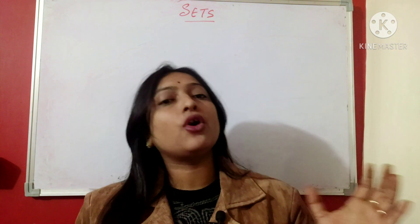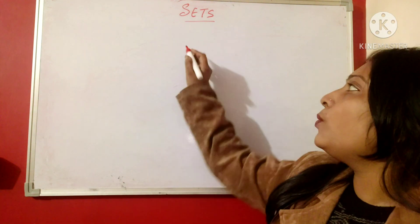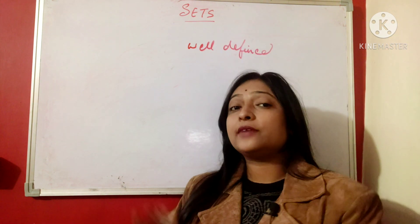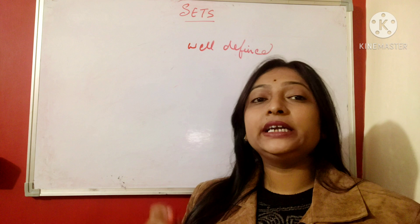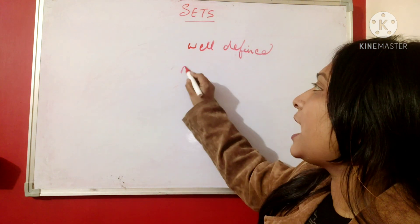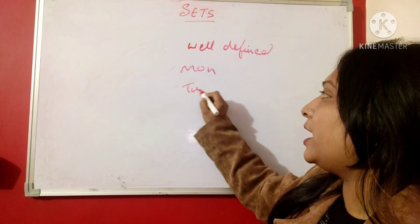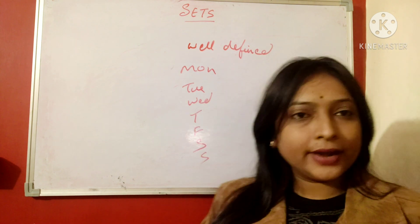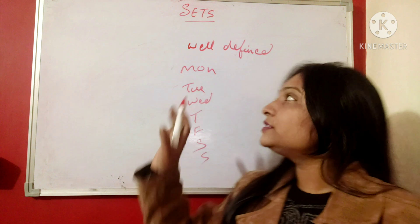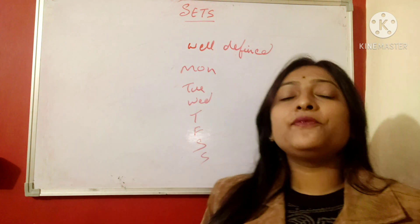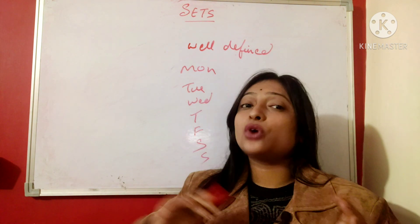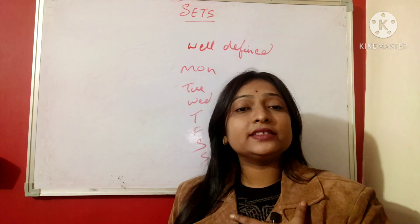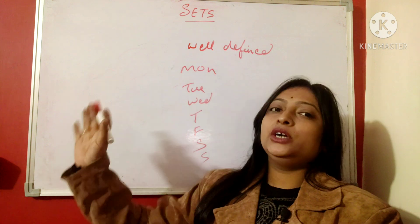What is a set? A set is basically a well-defined collection of some elements. Now what is the meaning of well-defined? Well-defined means whenever we have some distinct things. For example, if we talk about the days in a week, we have Monday, Tuesday, Wednesday, Thursday, Friday, Saturday, and Sunday — these are distinct elements, and this is called well-defined.